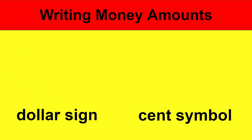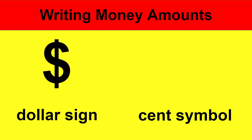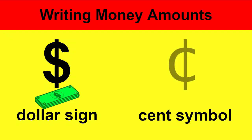When we're writing money amounts, we sometimes use the dollar sign, and that is used when the amount is more than 100 cents — when it is more than a dollar. The cent symbol is used when the amount of the item is less than one dollar, or less than 100 cents.